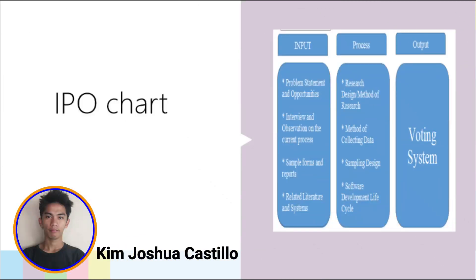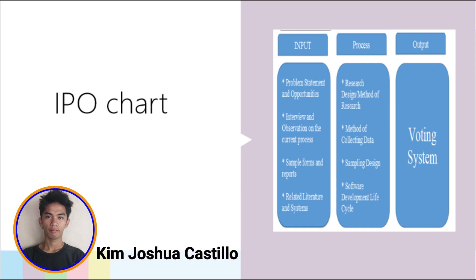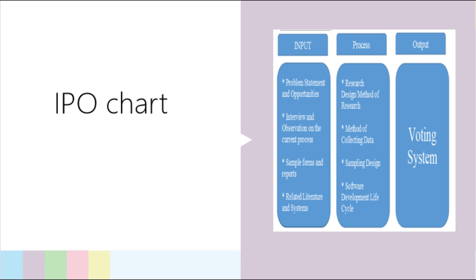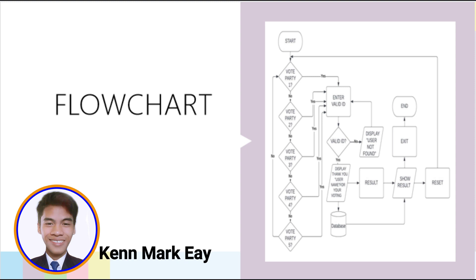First, you need to input the problem statement and opportunities, interview and observation on the current process, sample forms and reports, and related literature and system. On the process, the system will perform the research design or method of research, method of collecting data, sampling design, and software development lifecycle. Then on the output, the whole process will produce the voting system that we are using right now.